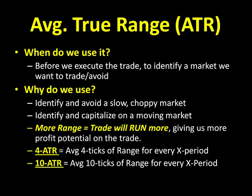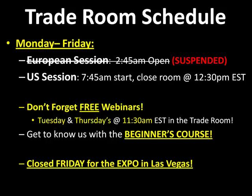The higher the range, the more the trade will run, giving us more profit potential. For example, if the ATR is at 4, that means an average of 4 ticks of range for every X period. So if we have a 4 ATR on a 1-minute chart, that would be an average of 4 ticks of range for every 1 minute. A 10 ATR on a 1-minute chart would be 10 ticks of range on average for every 1 minute of price. The higher the number, the more the range. We'll show you guys how we use this ATR tool every day in our live trade rooms.